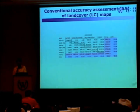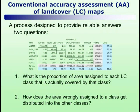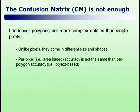Don't get me wrong — I have nothing against the confusion matrix; it's a great tool. This is the final confusion matrix of our map. We have three hierarchical levels; this is the higher level with only six classes. With the confusion matrix you reply to two very important questions, but when your units of reference in the map are not pixels but polygons, the story changes quite a bit.